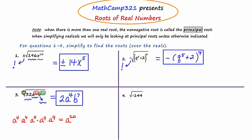Let's move to number four. Number four asks us to simplify the square root of negative 144. You can't take the square root of negative numbers and remain in the real number system. Since the directions say to simplify over the reals, this question is not going to be possible. So we're going to say no solution.